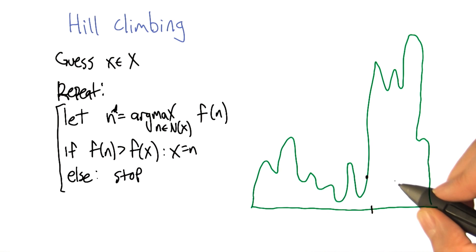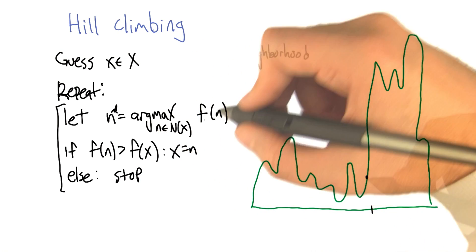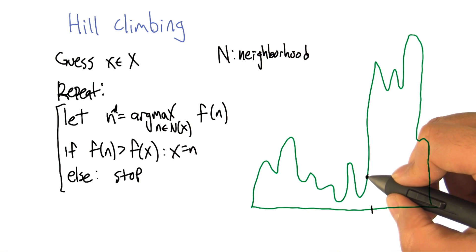And then we say, okay, let's move around in a neighborhood around that point and see where we can go that would actually improve the function value.